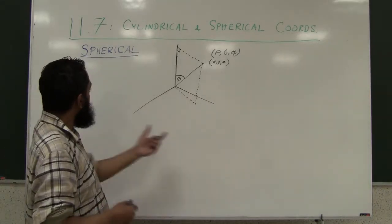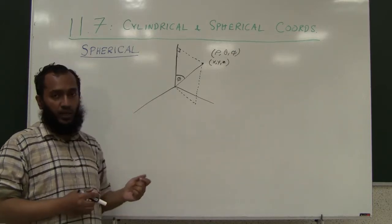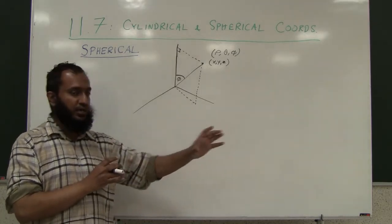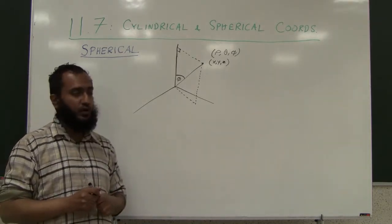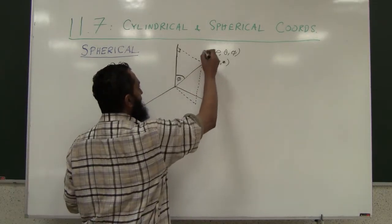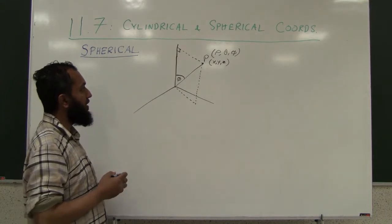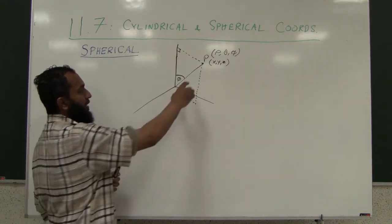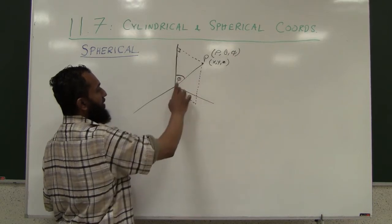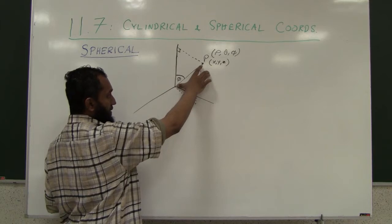Now, after having some familiarity with the spherical coordinate system, we're going to see what's the algebraic relationship between the XYZ coordinates and the rho-theta-phi coordinates. So we have a point P here with XYZ coordinates and its corresponding rho, phi, theta. Let's see what's the relationship between them. Phi is the angle of the line between P and the origin.